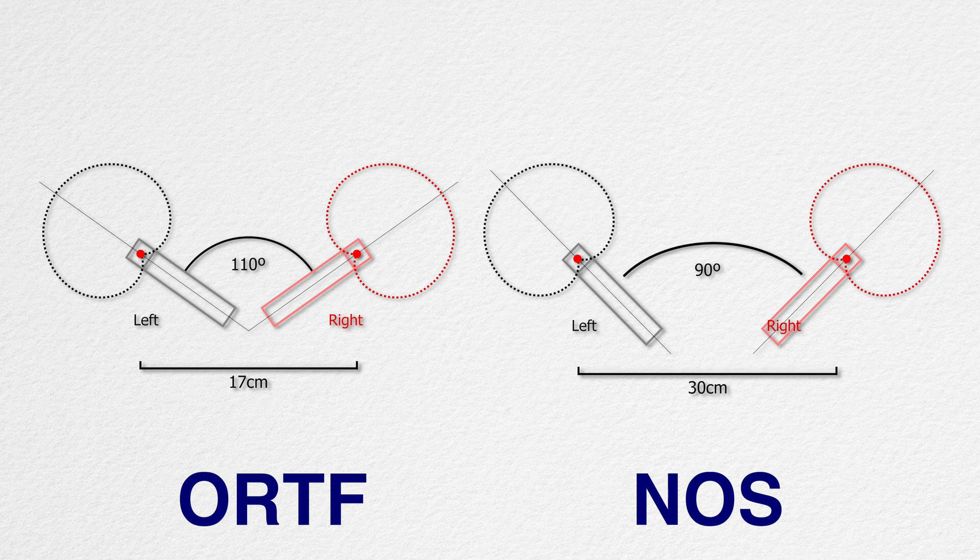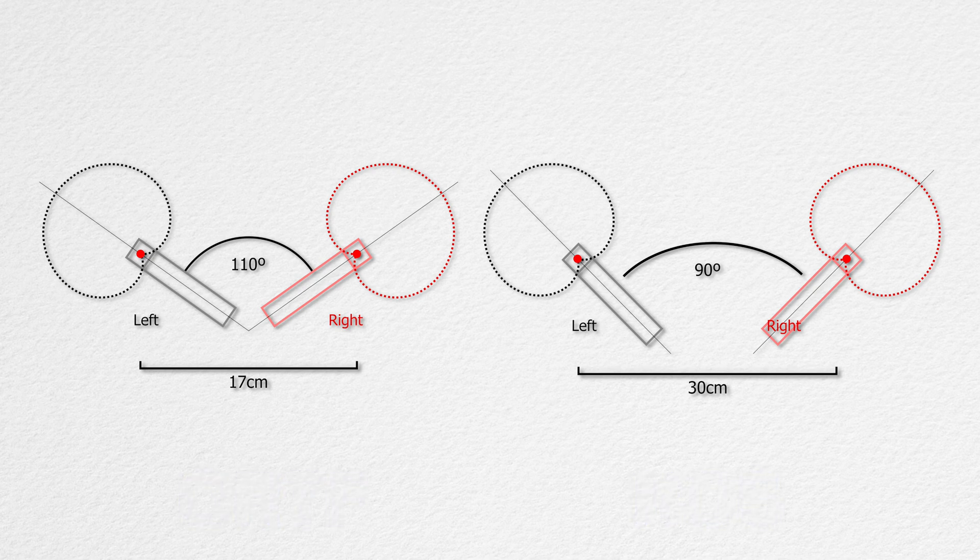Ever wonder why ORTF is exactly 17 centimeters, and each mic faces 55 degrees outward? I did. Then NOS is 30 centimeters, with each mic facing 45 degrees outward. I've wondered about that one too. DPA Microphones has an excellent webpage dedicated to the spacing and angle of various microphones to use in various distances and angles.